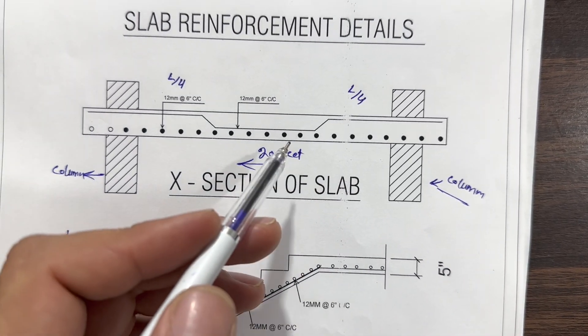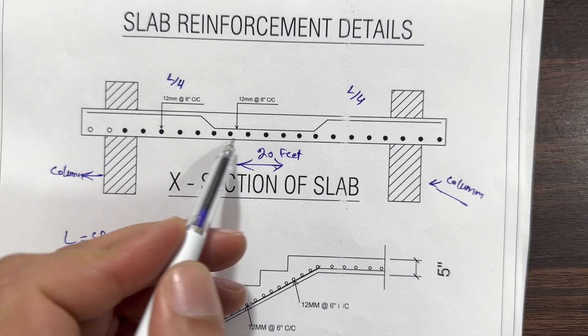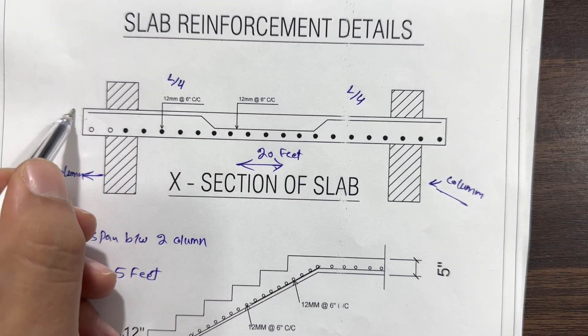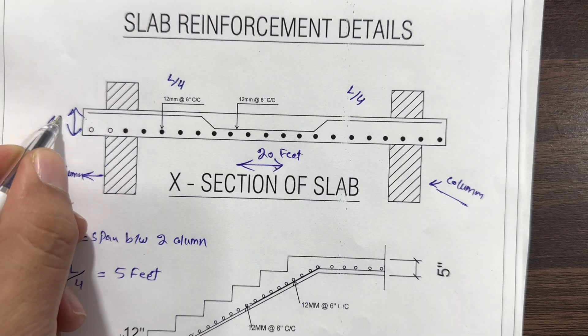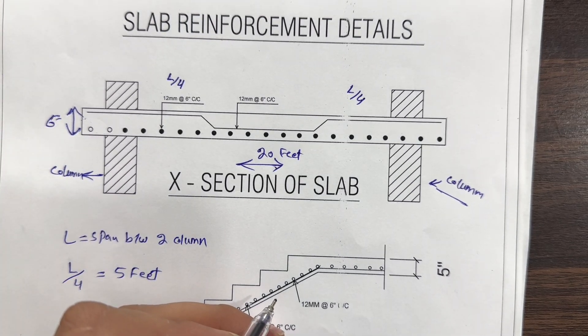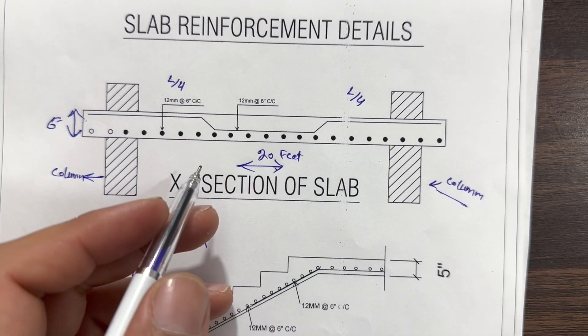Here you can see we have main bars and distribution bars at the bottom. This is thickness of slab first of all. The thickness of the slab is 6 inches. Sometimes we are keeping 5 inches, 7 inches. It's dependent on the structure load.